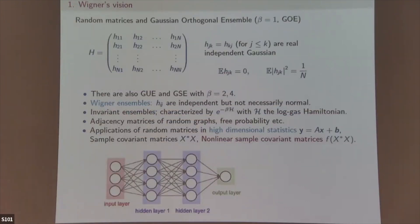The Gaussian Orthogonal Ensemble: each matrix element is distributed with standard variance 1/n, mean zero, the matrix is symmetric. This is called the Gaussian Orthogonal Ensemble. You can also define the GUE and GSE.